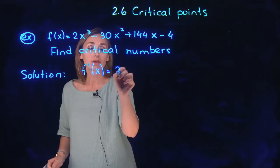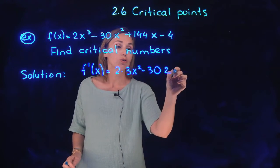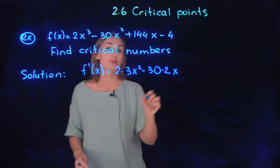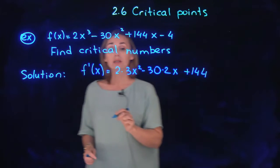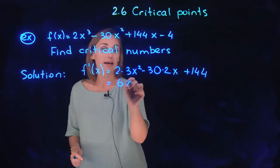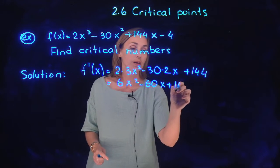This is 2 times 3x squared minus 30 times 2 times x plus 144. Now you will get 6x squared minus 60x plus 144.